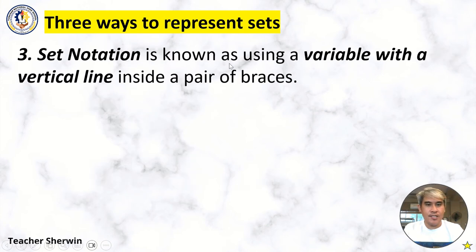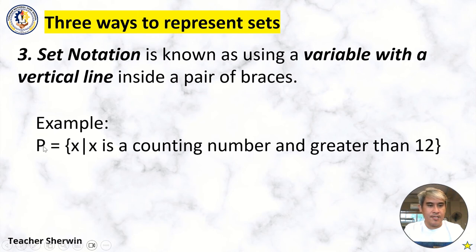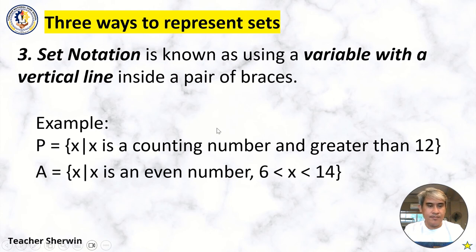Three, set notation is known as using a variable with a vertical line inside a pair of braces. For example, Set P equals {X such that X is a counting number and greater than 12}. Set A equals {X such that X is an even number, X is greater than 6 but less than 14}.